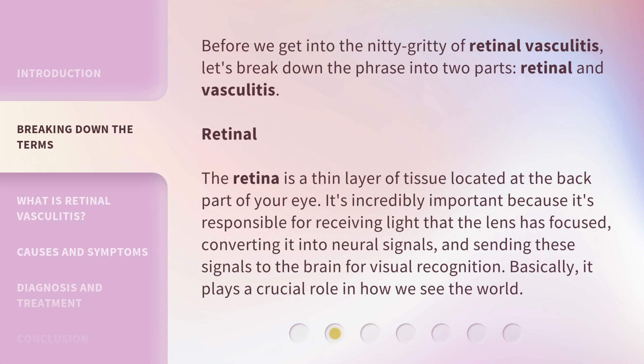Before we get into the nitty-gritty of retinal vasculitis, let's break down the phrase into two parts: retinal and vasculitis. The retina is a thin layer of tissue located at the back part of your eye. It's incredibly important because it's responsible for receiving light that the lens has focused, converting it into neural signals, and sending these signals to the brain for visual recognition. Basically, it plays a crucial role in how we see the world.